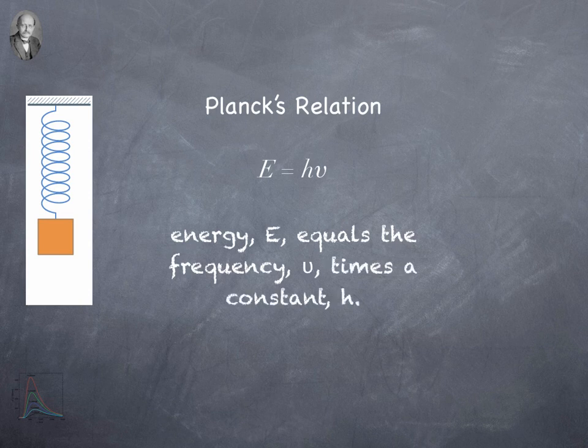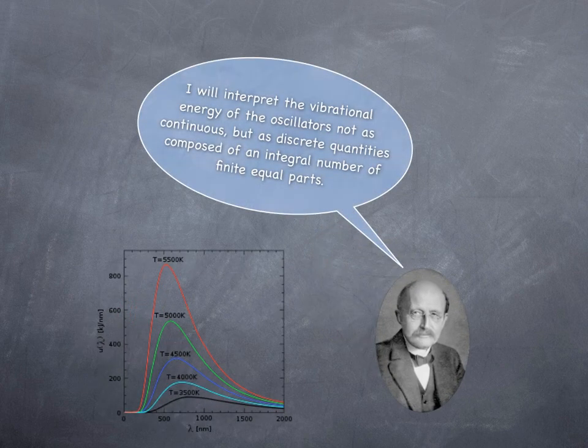He comes up with Planck's relation, which is energy equals the constant H times the frequency — which is written as a little Greek nu. This makes sense: the higher the frequency, the higher the energy. Frequency is how quick the thing's bouncing up and down. If it's bouncing really, really quick, there's going to be more energy than if it's bouncing really slow. Planck interpreted the vibrational energy of the oscillators not as continuous, but as a discrete quantity, composed of an integer number of finite equal parts.